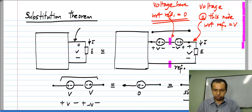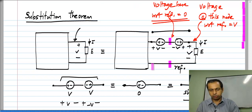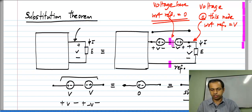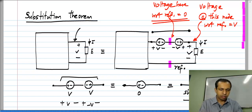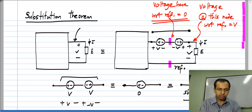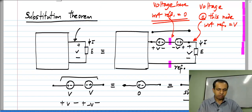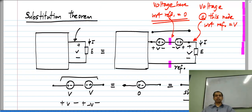So these two nodes highlighted in pink have 0 voltage — the reference by definition has 0 voltage, and this node has the same voltage as the reference, which is also 0. This means that if I have two nodes in the circuit with exactly the same voltage, I can connect the two together without altering anything else in the circuit.